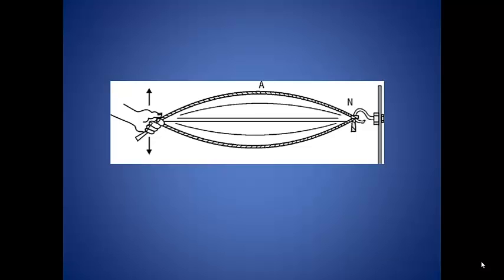Imagine a rope with a fixed end, in this case being tied to a wall, and you moving your hand up and down to create a wave. The wave will travel down the rope, hit the wall, and be reflected back to you, inverted.